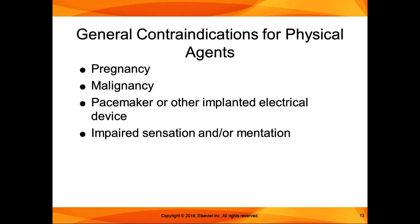The second general contraindication is malignancy or cancer tumor. The energy produced by the agent or its physiological effects might reach malignant tissue or alter its circulation. Some physical agents are known to accelerate growth or metastasis of malignant tissue. Malignant tissue stimulates angiogenesis — creating a new blood supply to support the tumor — and we don't want to do anything that increases that blood supply. Mechanical agents that might break up tumor tissue and spread it throughout the body are especially dangerous.